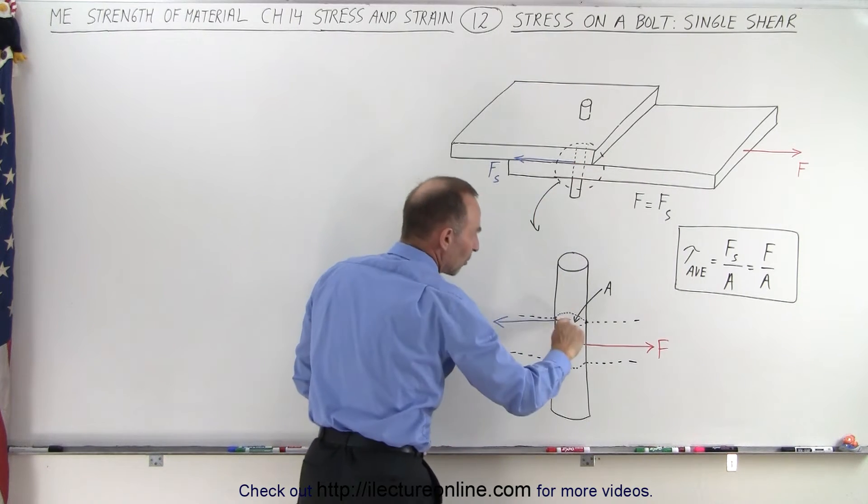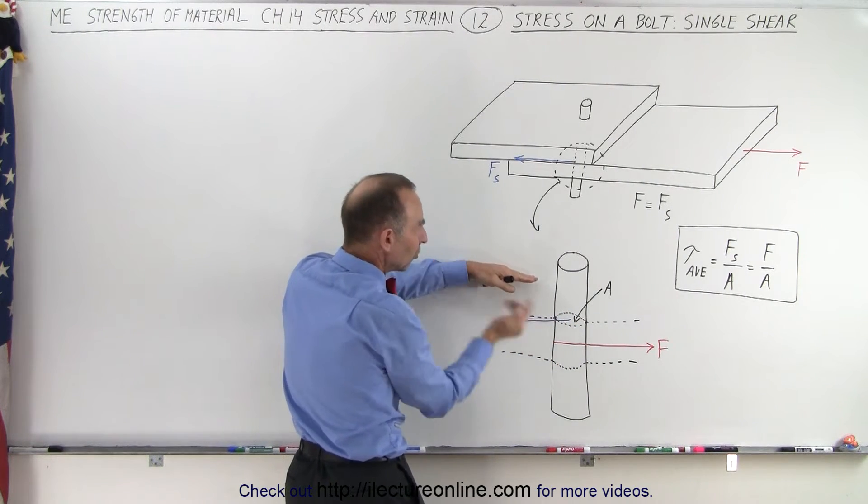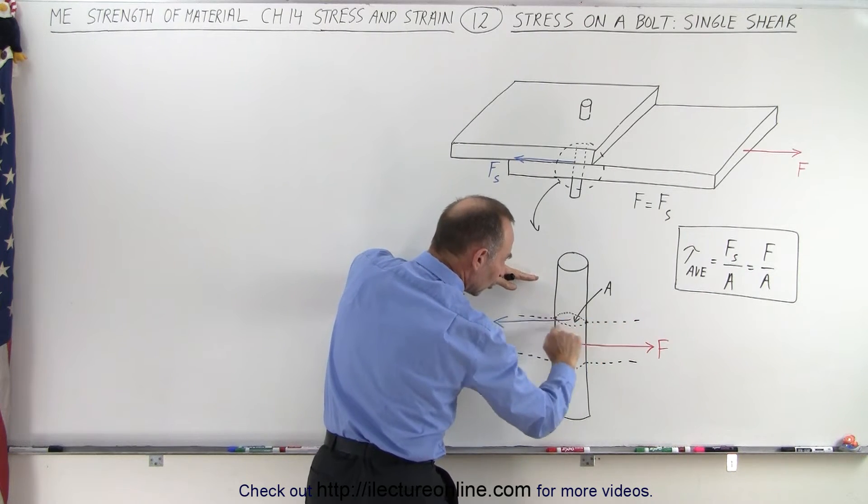If we take this line right here to be this line right there, you can see that somebody is holding this board in this direction, someone is pulling this board in that direction, and we're applying a shear stress right here.